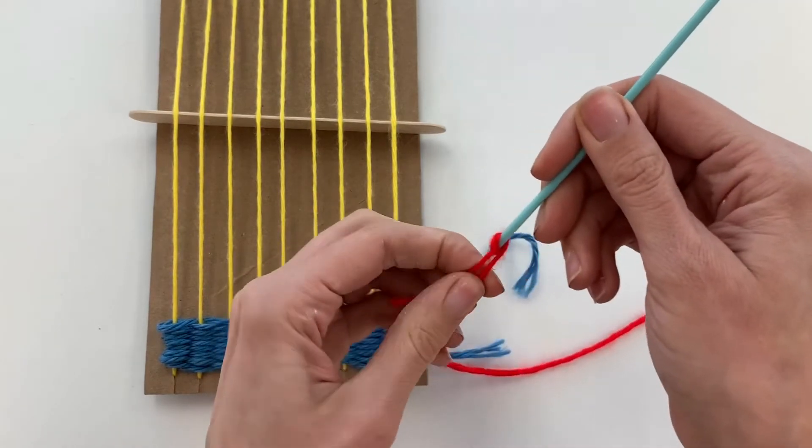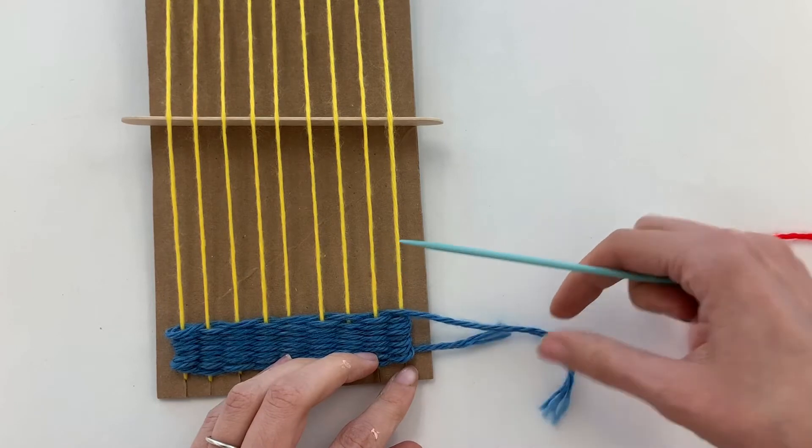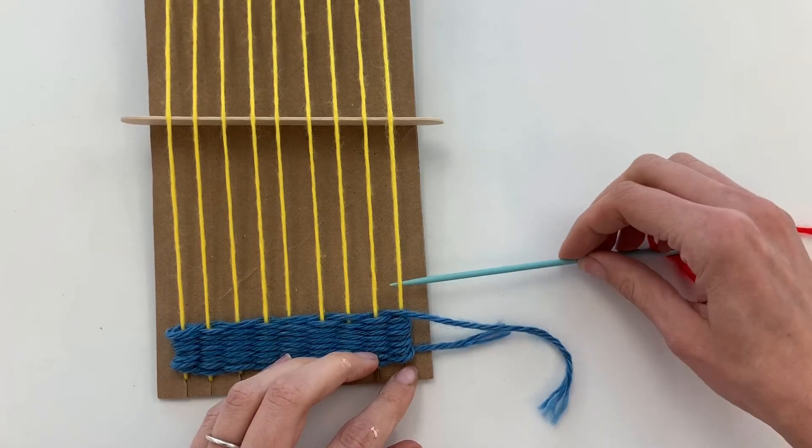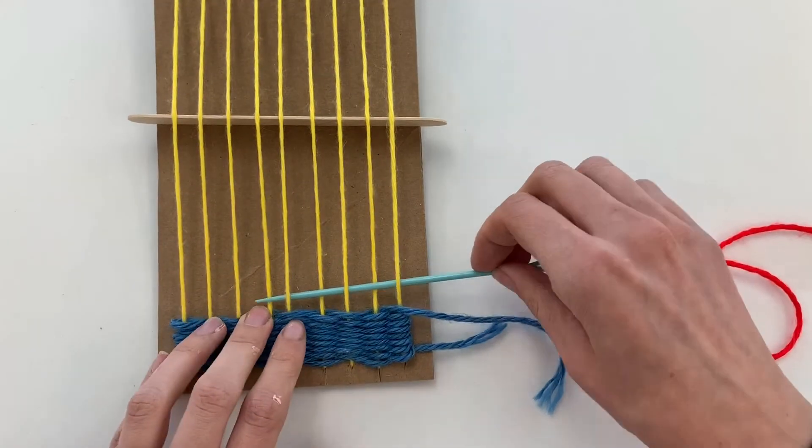Now from here, I'm just going to look at the opposite of what I did last time. So last time I ended with this going over, this time I'm going to start by going under, and then I'm just going to continue just as I was before.